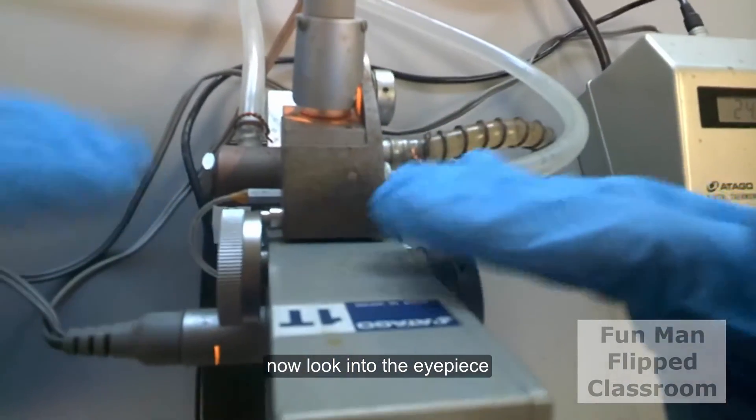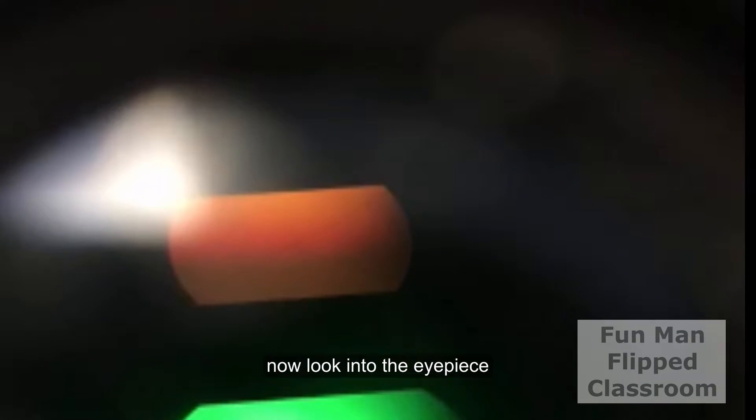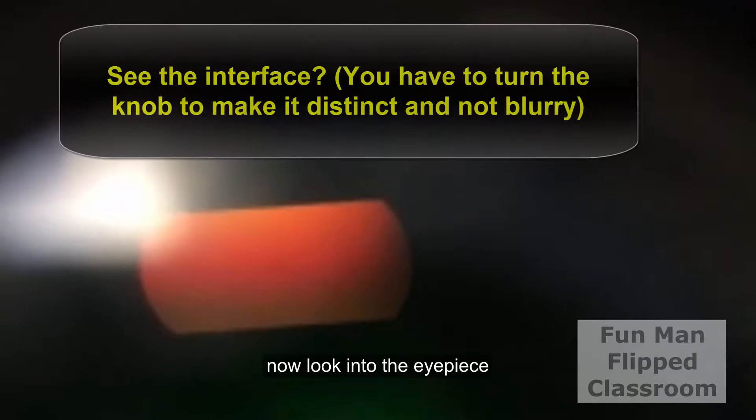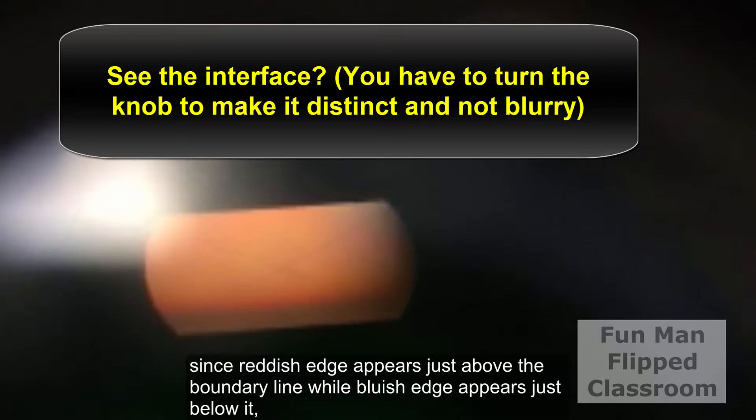Now look into the eyepiece. Turn the color compensation knob to achromatize the boundary line. And stop turning when the boundary line becomes neither reddish or bluish. Since reddish edge appears just above the boundary line, while bluish edge appears just below it.